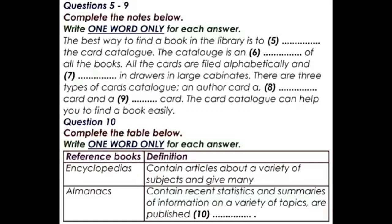The best way to locate a book in the library is to use the card catalogue. The card catalogue is an index of all the books in the library. Information about a book is listed on cards. All the cards are filed alphabetically and stored in drawers in large cabinets. The card catalogue can help you locate a particular book, a book on a certain subject, or a book by a particular author.